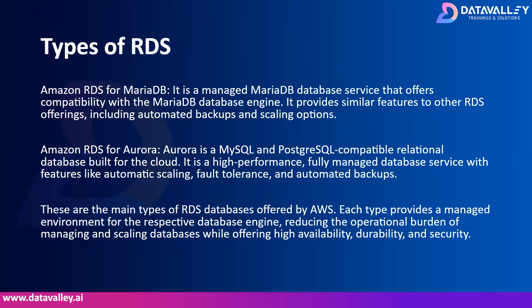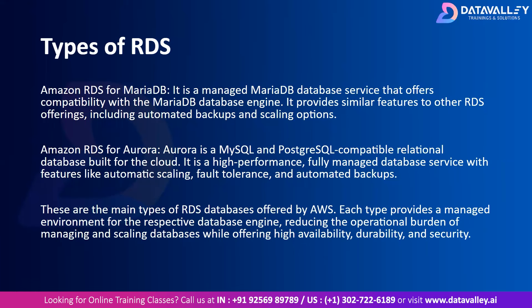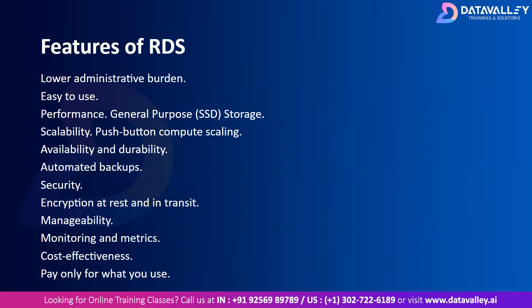Amazon RDS for MariaDB is a managed MariaDB database service offering compatibility with the MariaDB engine, with automated backups and scaling. Amazon RDS for Aurora is a MySQL and PostgreSQL-compatible relational database built for the cloud — a high-performance, fully managed service with automated scaling, fault tolerance, and automatic backups. These are the main types of RDS databases offered by AWS, each providing a managed environment that reduces the operational burden while offering high availability, durability, security, and automatic backups.